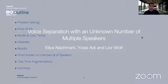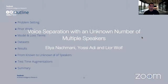The outline of the presentation is this. At the beginning I'm going to talk about the problem setting, and then I'm going to show the prior work. Then we're going to talk about our model and the new loss terms. Then we will see which dataset we use to train and evaluate our model, and then we will see the results. After that, we will see how we can move from a known number of speakers to an unknown number of speakers, and also how we can improve the result with test time augmentation. And then I'm going to summarize.